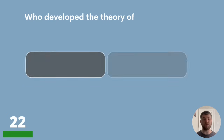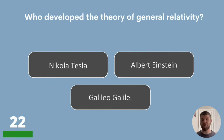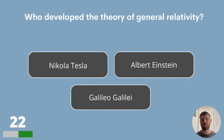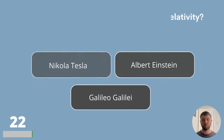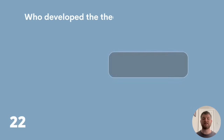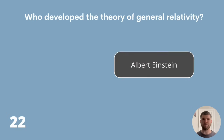Question 22. Who developed the theory of general relativity? Nikola Tesla, Albert Einstein or Galileo Galilei? The answer is Albert Einstein.